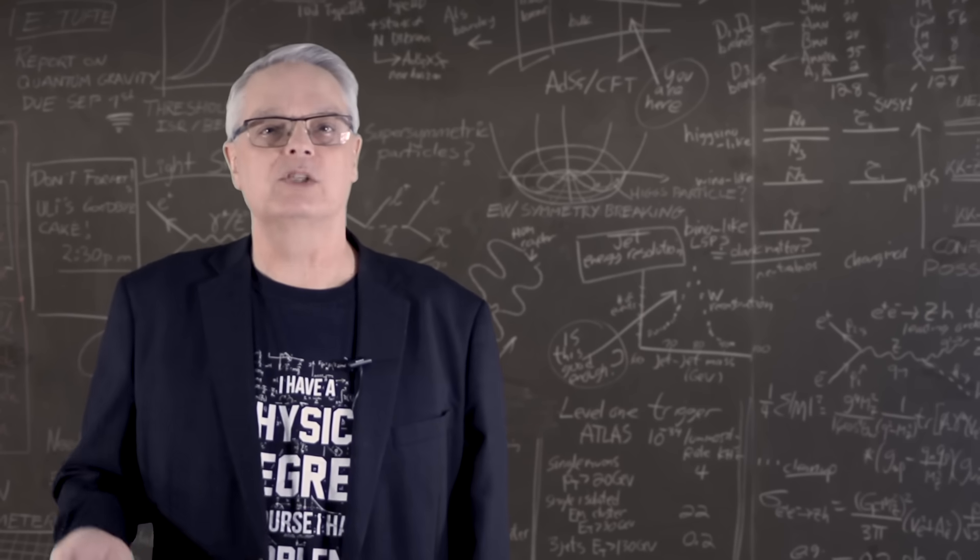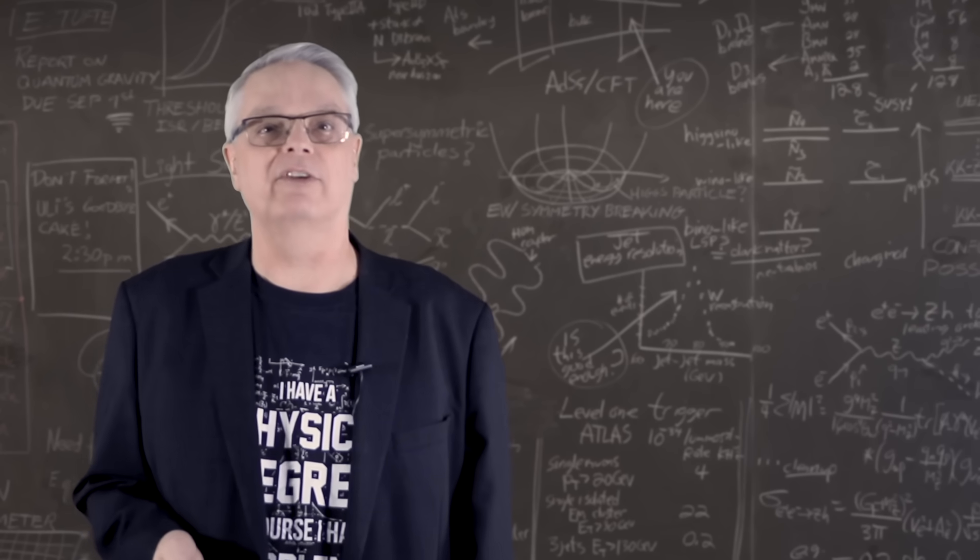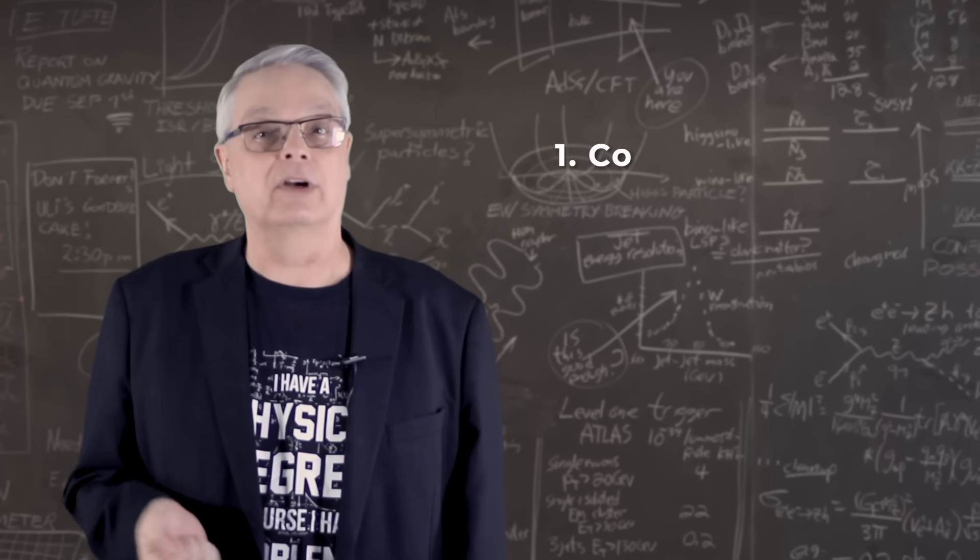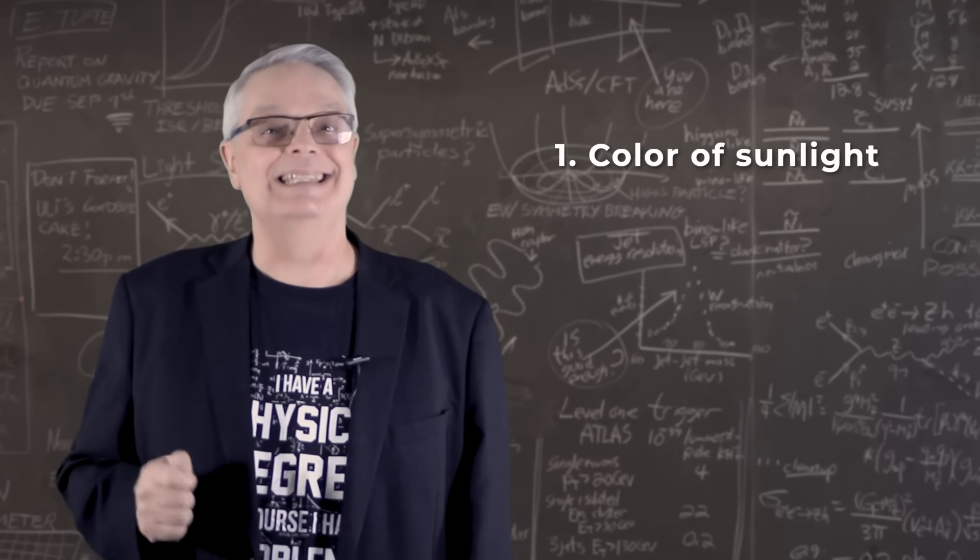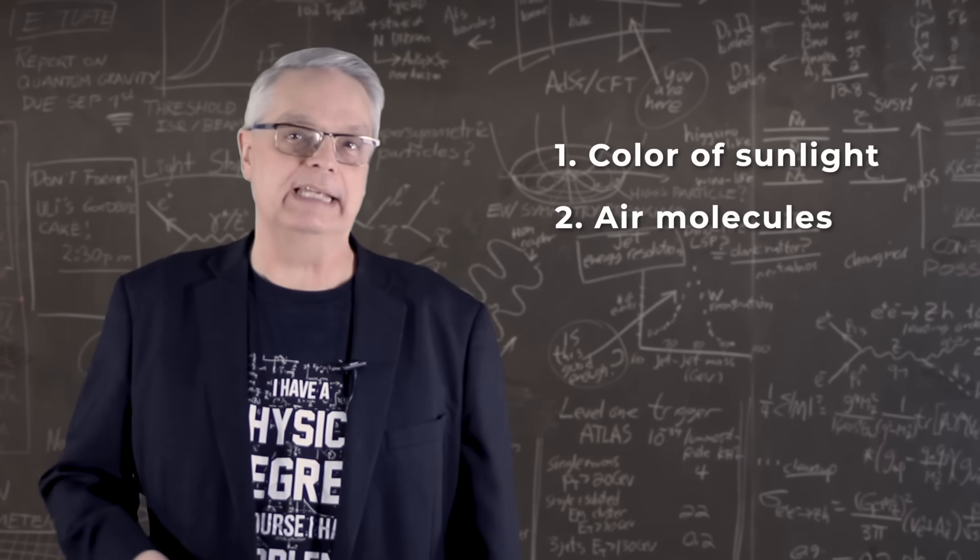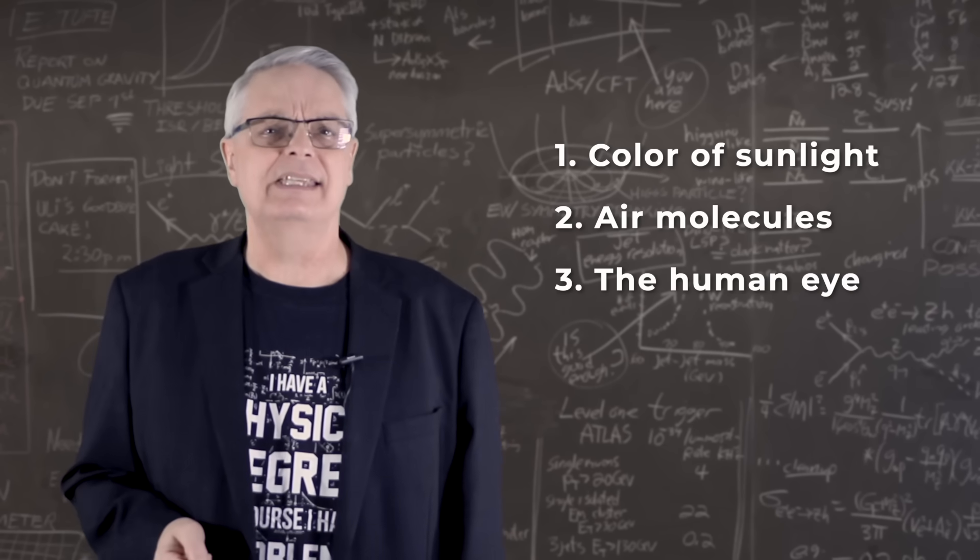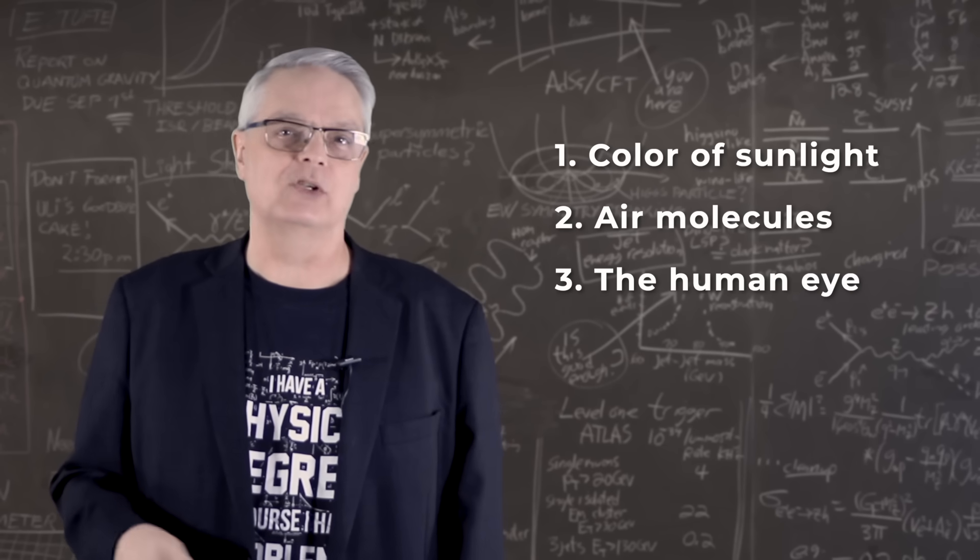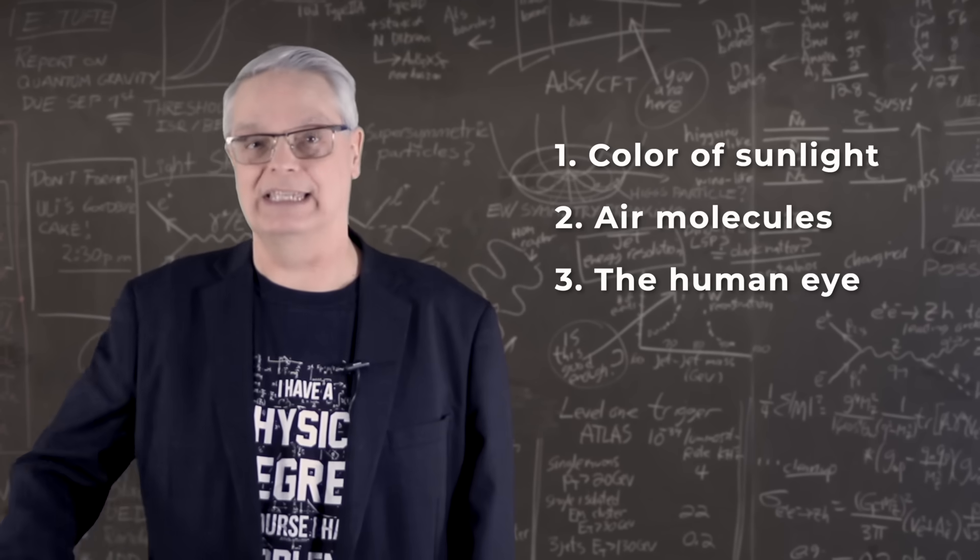It turns out that the sky is blue because of three specific factors. They are the color of light from the sun, details of air molecules, and finally, the specifics of the human eye. Let's see how these factors work together to answer one of childhood's first scientific questions.